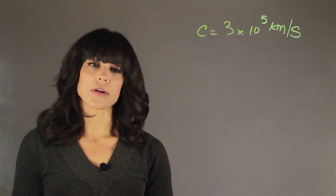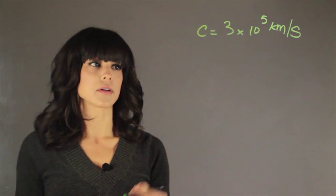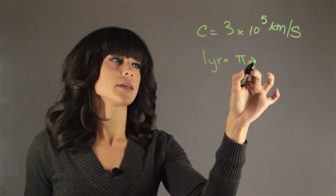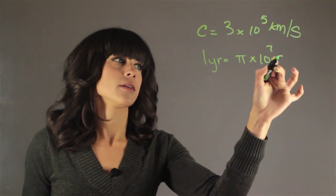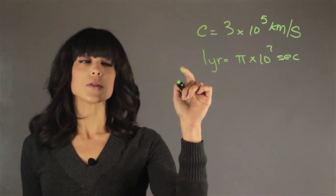First we need to know how many seconds are in one year. So one year is equal to pi times 10 to the 7 seconds.